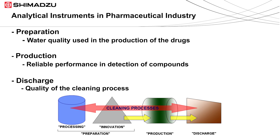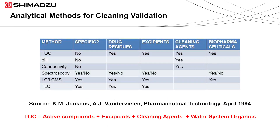This presentation will focus on the cleaning process after production of the drugs. In the chart are some analytical methods to consider for cleaning validation. The consideration areas from left to right are method, specificity, drug residues, excipients, cleaning agents, and biopharmaceuticals. Currently, biopharmaceuticals account for less than 10% of prescription drugs today, and that rate is expected to rise to 80% by 2020. The first method, TOC, is a nonspecific method. It can measure drug residues, excipients, cleaning agents, and biopharmaceuticals.